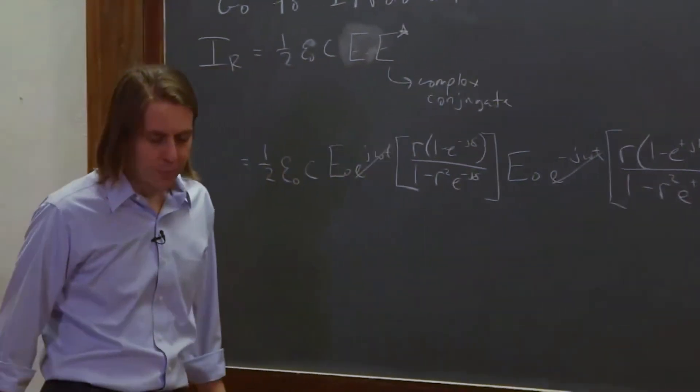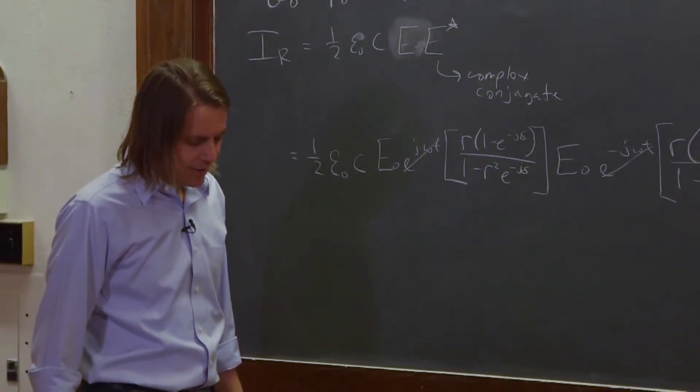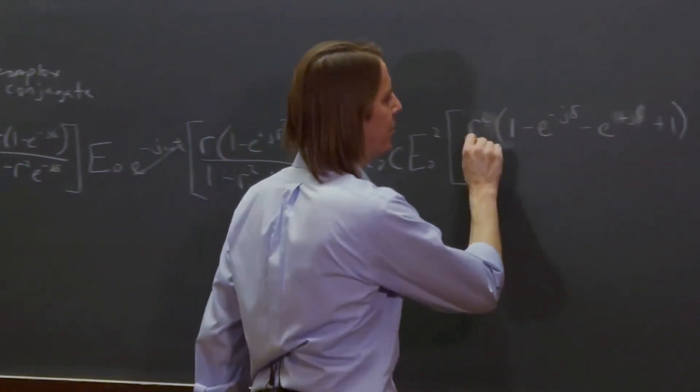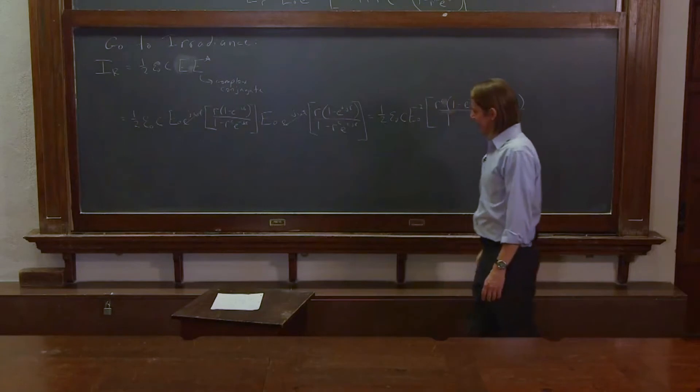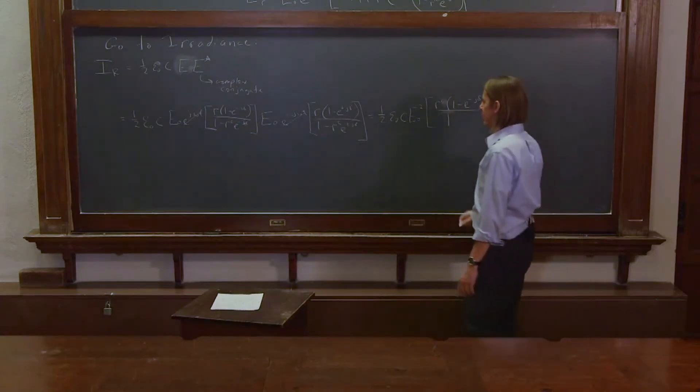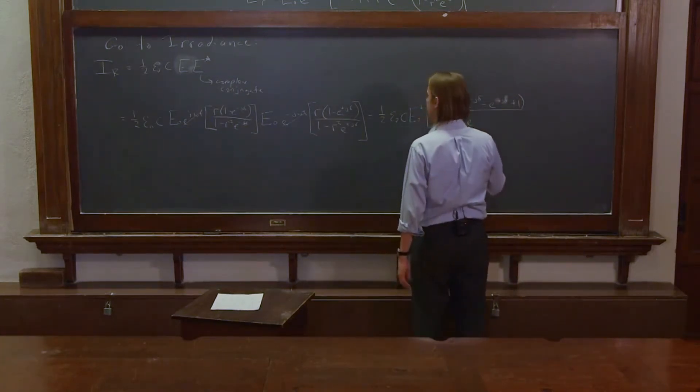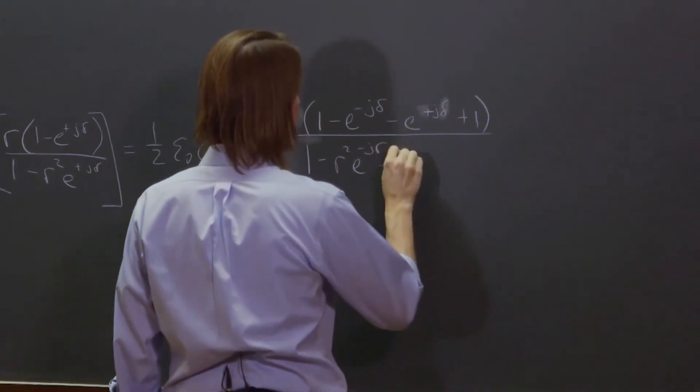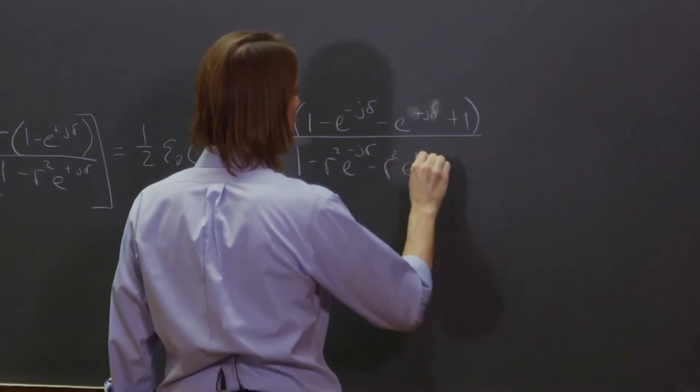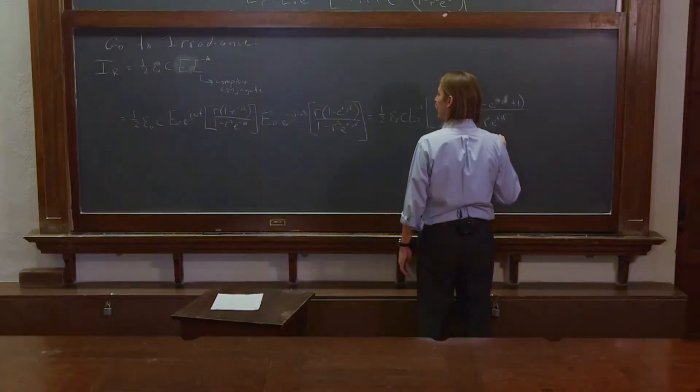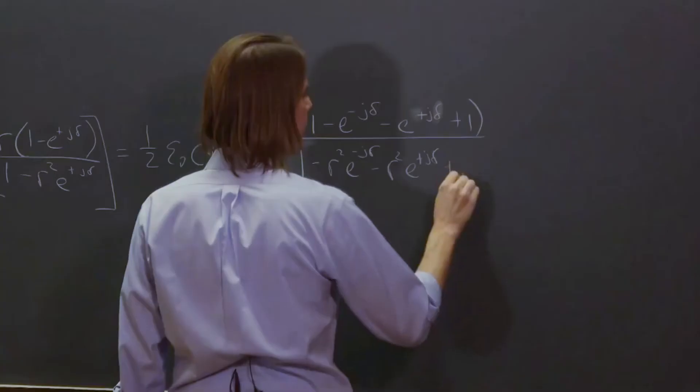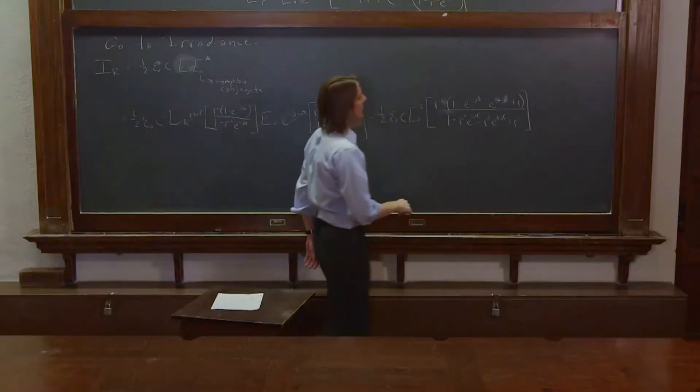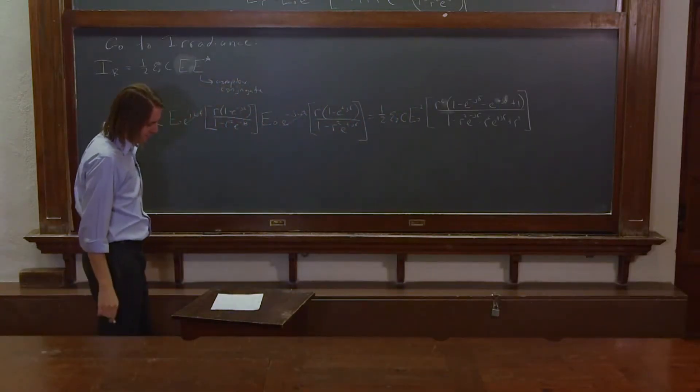So that's actually, the two 1s can give you a 2 if you're so inclined. And then in the bottom, oh, it's just 1. We've got to multiply out the bottom as well. So 1 minus R squared E to the minus J delta, minus R squared E to the plus J delta, and then finally plus R squared E to the zero. All that mess is in there.